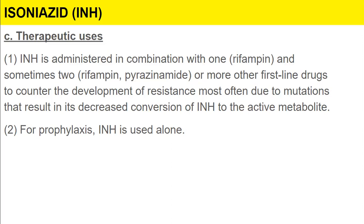Isoniazid is administered in combination with rifampin, and sometimes with rifampin and pyrazinamide or other first-line drugs, to counter the development of resistance — most often due to mutations that result in decreased conversion of INH to its active metabolite. For prophylaxis, isoniazid is used alone. When taking antibiotics for a longer period, it is important not to miss doses, otherwise resistance can develop.